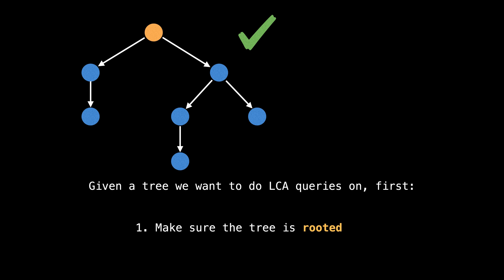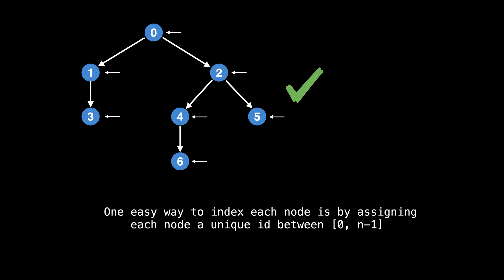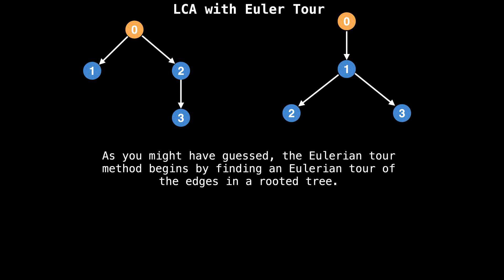First, you want to make sure you're dealing with a rooted tree. Otherwise, the concept of a lowest common ancestor doesn't really make sense because there's no orientation. The tree on the slide is already rooted, so we're good on that aspect. The next thing you want to do is ensure that all nodes are uniquely indexed. This is important so that there's a mechanism to reference nodes later on. The tree on this slide is not currently indexed, so let's go ahead and index all our nodes. One easy way I like to index my nodes is by assigning each node a unique ID between zero and n minus one inclusive. All you need to do is traverse the tree in any manner and label the nodes. Alright, now that we're done with the housekeeping stuff,